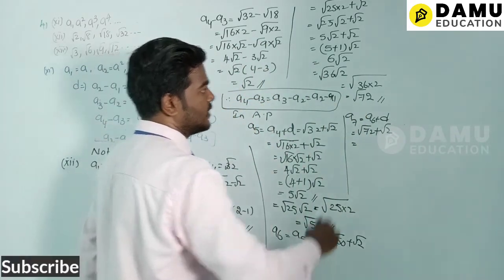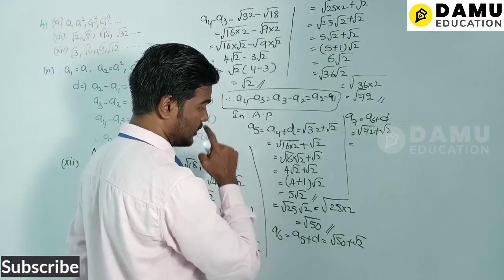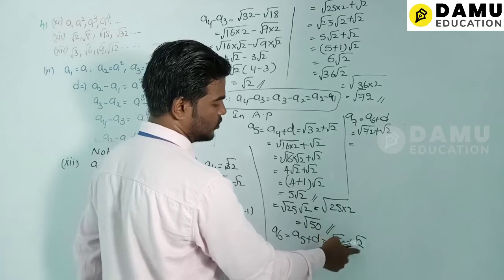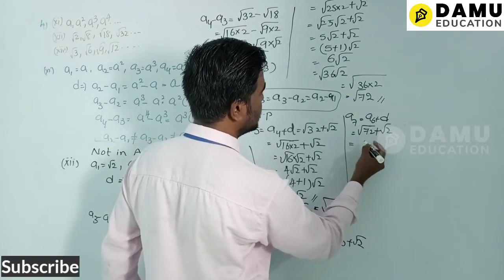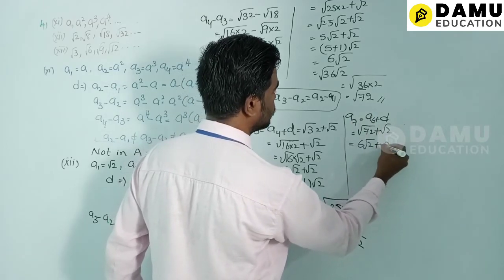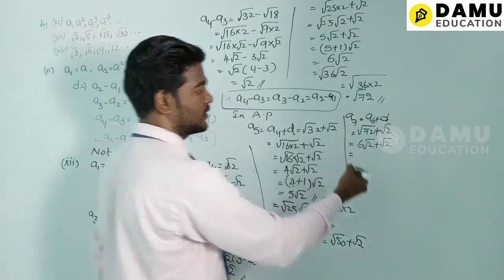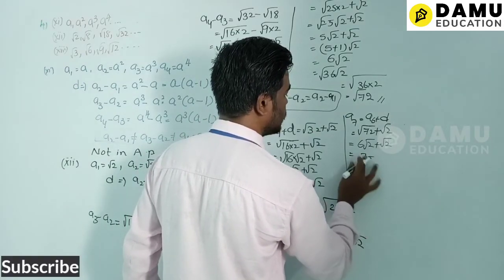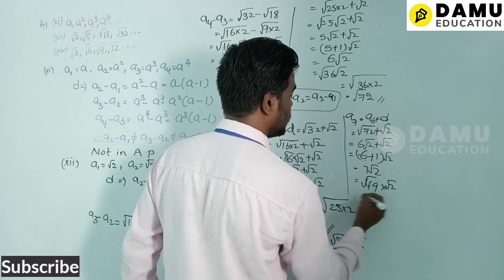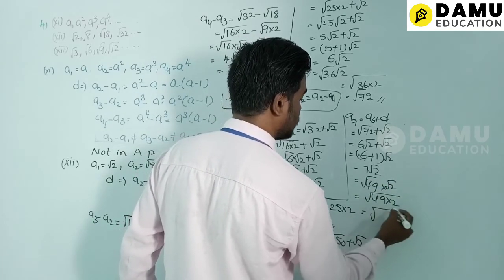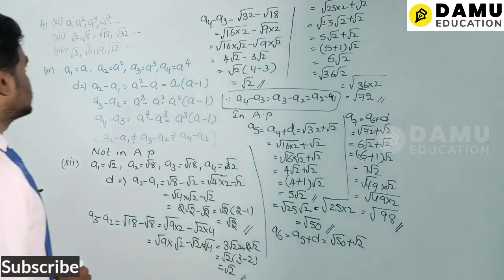We write 7 as √49, so 7√2 = √(49×2) = √98. So a7 = √98. The three more terms are √50, √72, and √98.